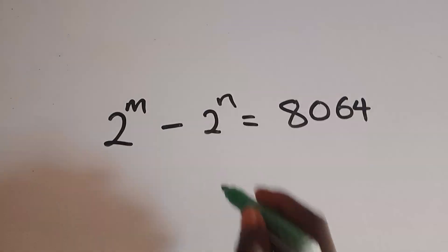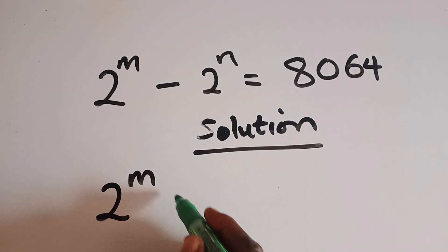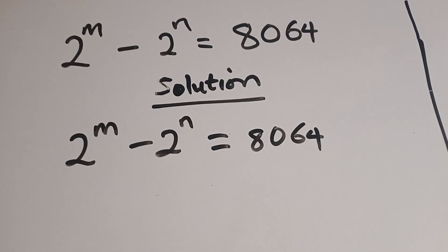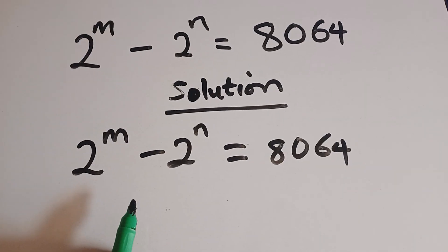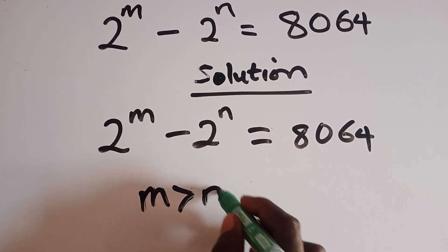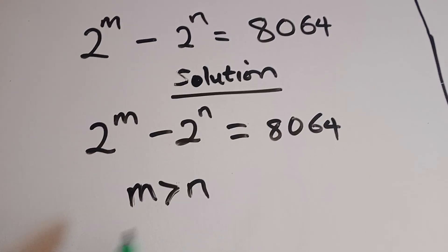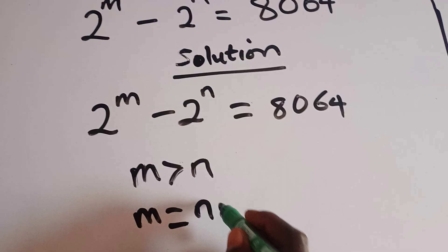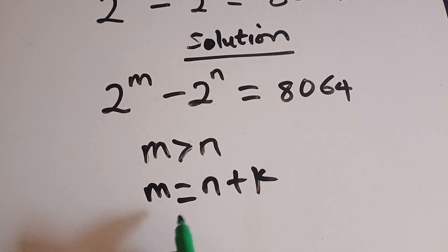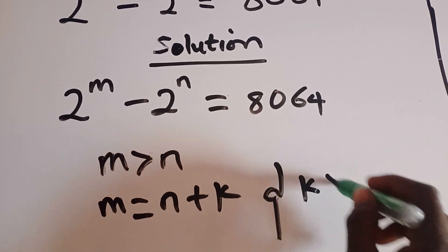First of all, let's rewrite our question. Solution. We have 2 raised to the power m minus 2 raised to the power n equal to 8064. The first thing to have in mind is that m must be greater than n for us to have a positive result. Once you have that in mind, since m is greater than n, we can write m equal to n plus a particular constant — let's call it k — where k must be greater than 0.